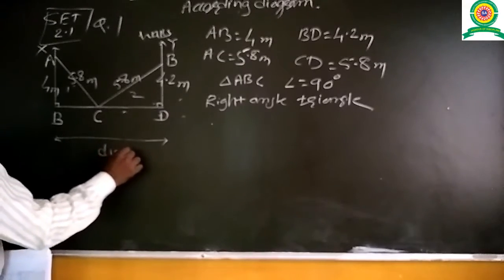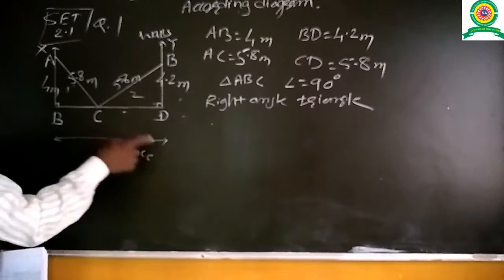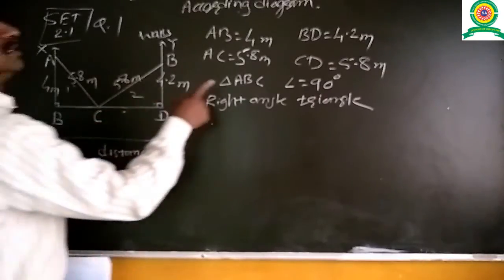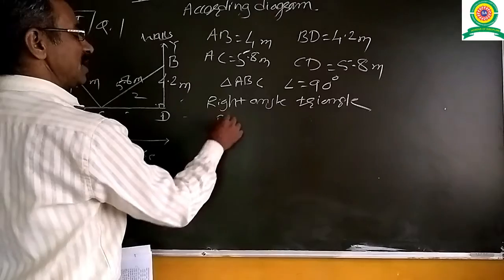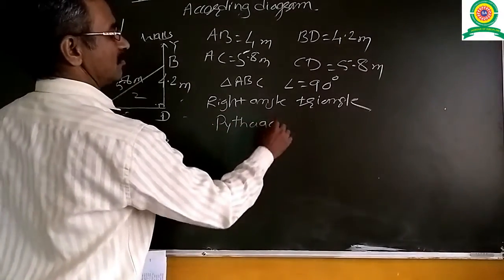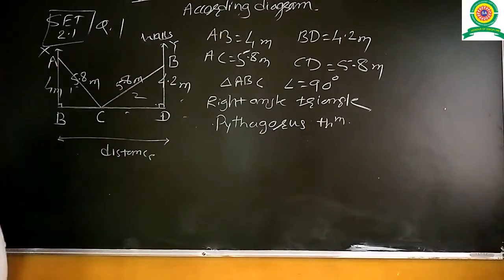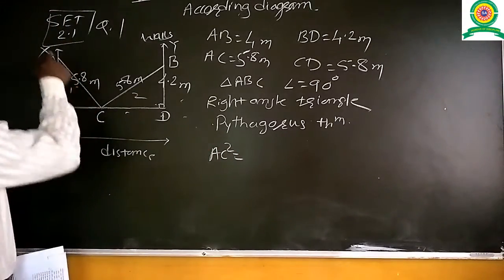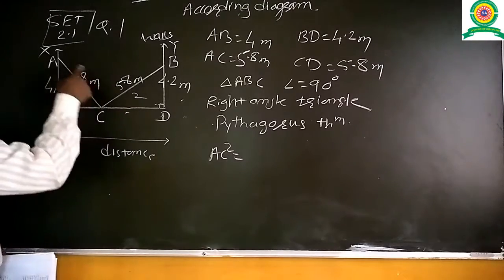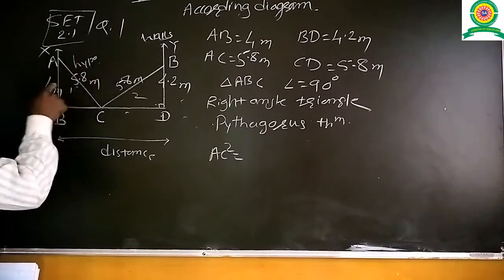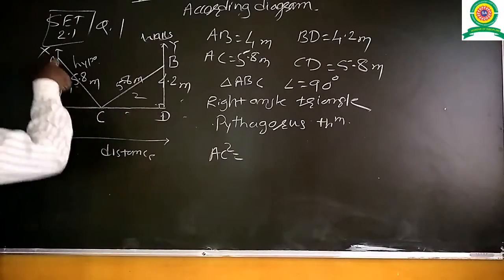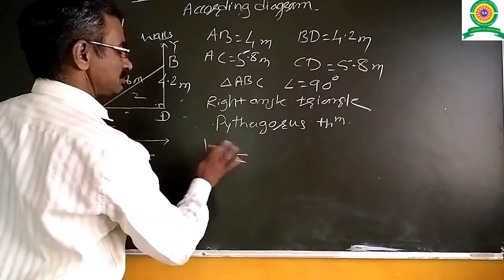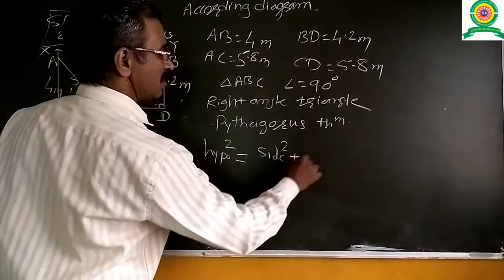Firstly, we are finding the length of BC and then the length of CD. Triangle ABC is a right-angle triangle, so by using the Pythagoras theorem, AC squared equals the sum of the squares of the two sides. AC is the hypotenuse, the side in front of the 90-degree angle. So, hypotenuse squared equals side 1 squared plus side 2 squared.